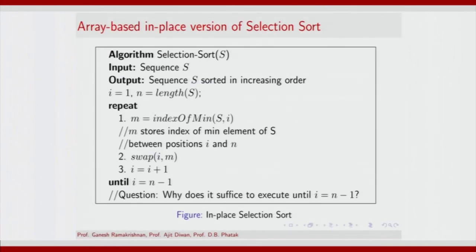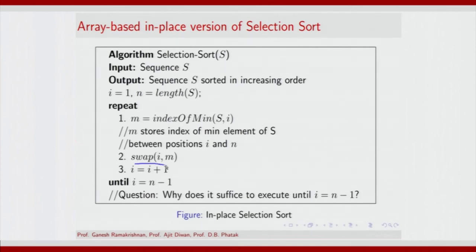Is there an in-place version of selection sort? It turns out there does exist an array-based in-place selection sort. The idea is that once you find the minimum element of S starting at position i — which is the index of the min between position i and position n, the end of the array — you swap the elements at positions i and m respectively. The idea is to get the effect of finding the minimum element and storing it back through a single swap operation.